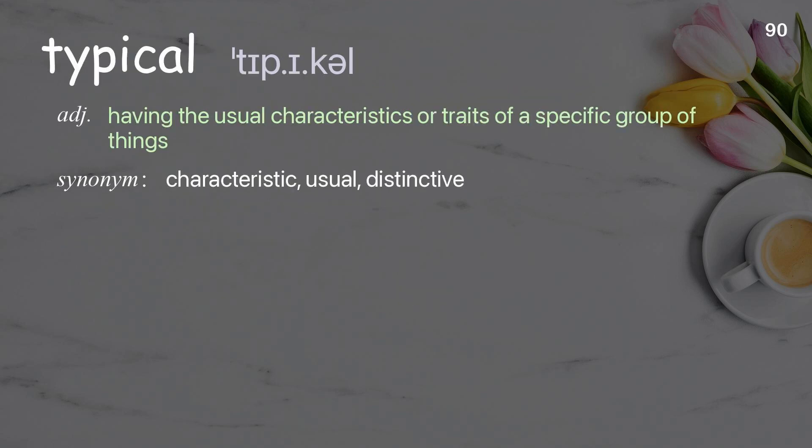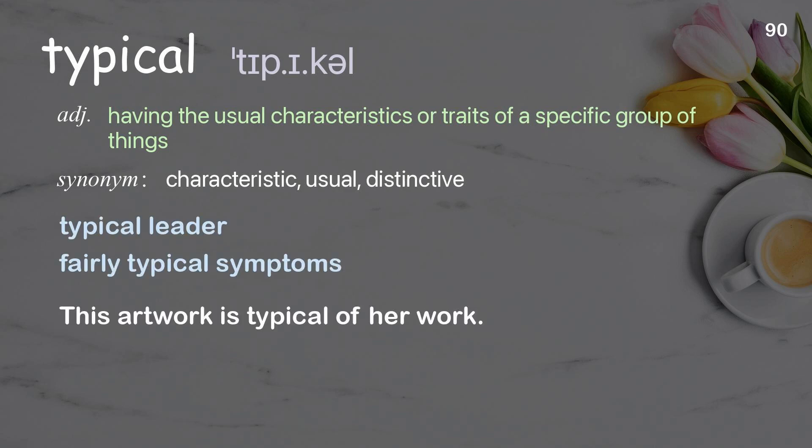Typical: having the usual characteristics or traits of a specific group of things. Examples: typical leader, fairly typical symptoms. This artwork is typical of her work.